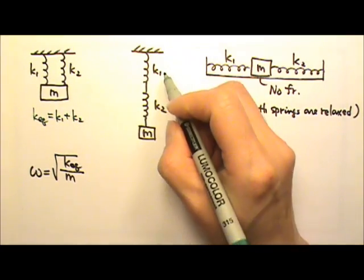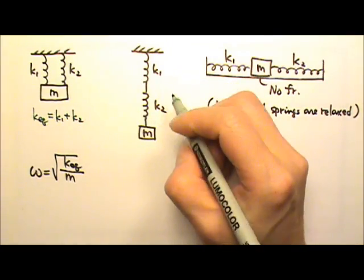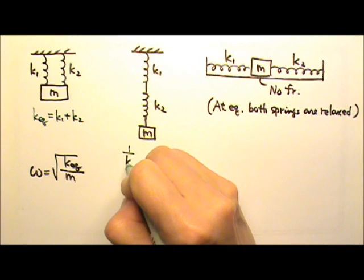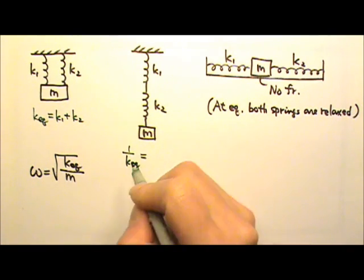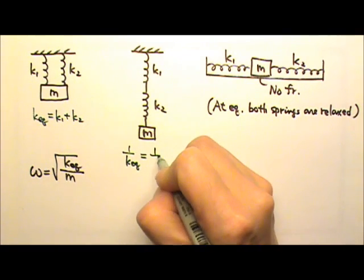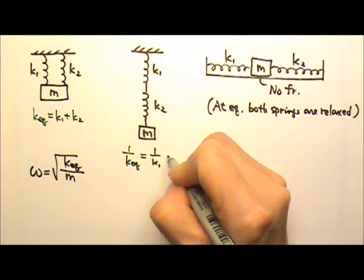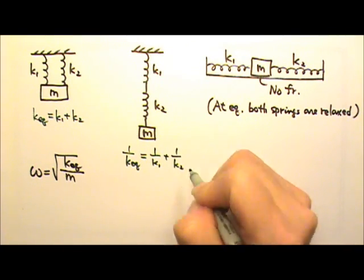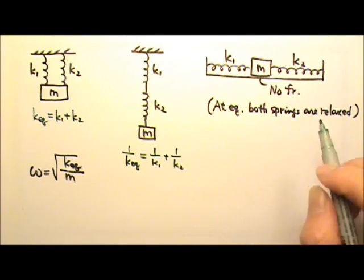If they are in series like this, the equivalent spring constant can be found using 1 over k-equivalent equals 1 over k1 plus 1 over k2.